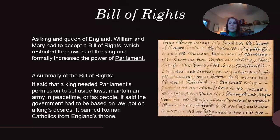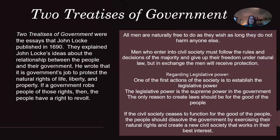A summary of the Bill of Rights: it said that a king needed Parliament's permission to set aside laws, maintain an army in peacetime, or tax people. It said the government had to be based on law, not on a king's desires. It banned Roman Catholics from England's throne. This was the start of not allowing one person to have absolute power. This also connects to the Two Treatises of Government — the same document we covered at the start of this lesson on page 204 in your student guide.